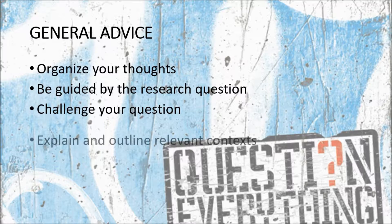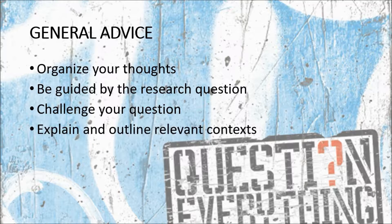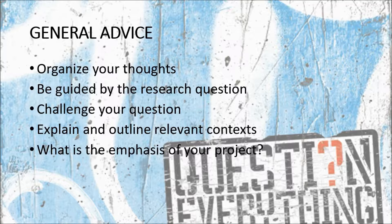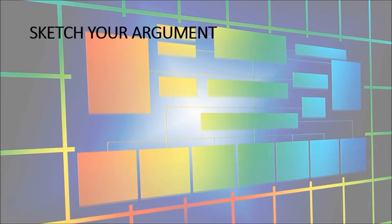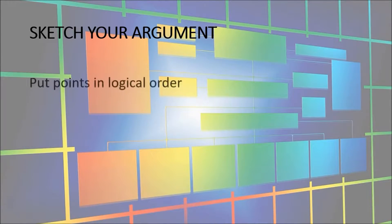If so, what are they? Might your question need a more neutral stance to give your argument more space and objectivity? Consider what contexts need explanation, how you'll go about this, and how early in your project they need to be outlined. Ask yourself: what is the emphasis of my project? Keep the answer written in a place where you'll see it regularly, and bear it in mind in any contextual explanations you include. Good, detailed, labeled notes will make these tasks easier.